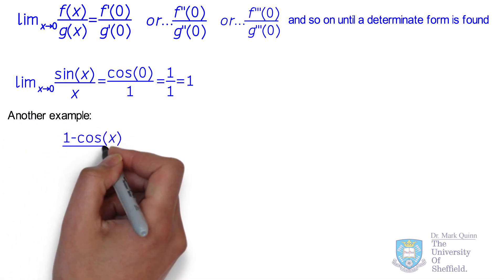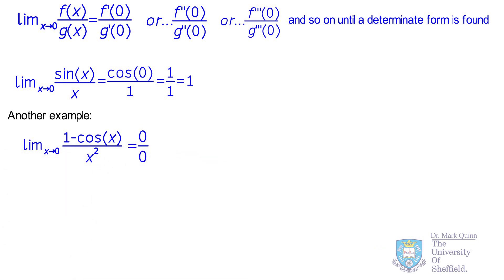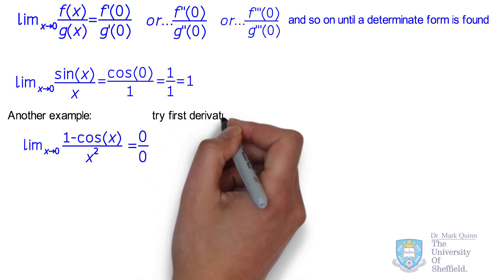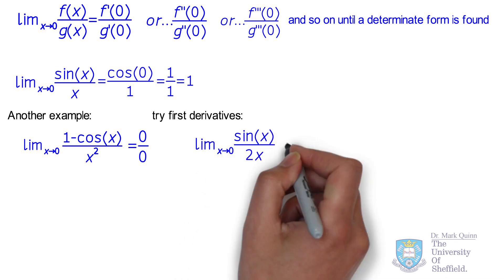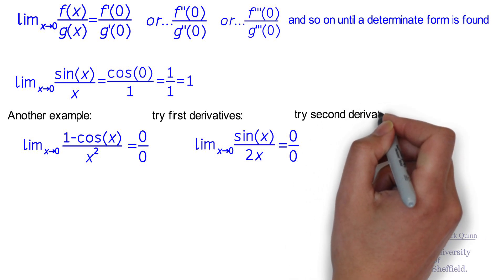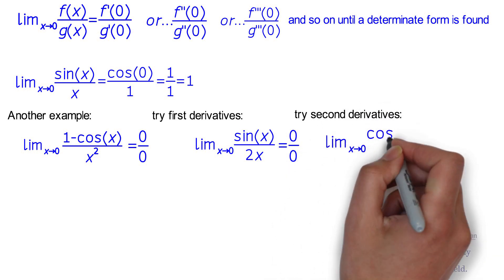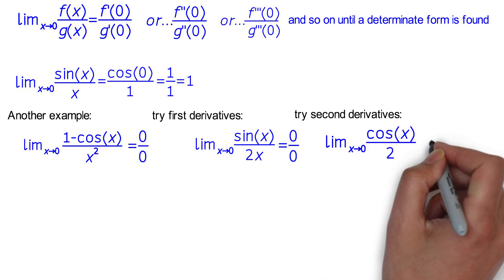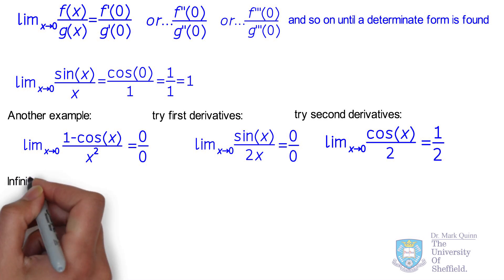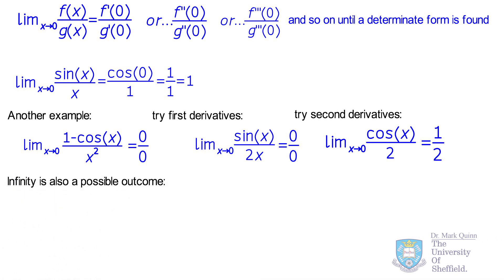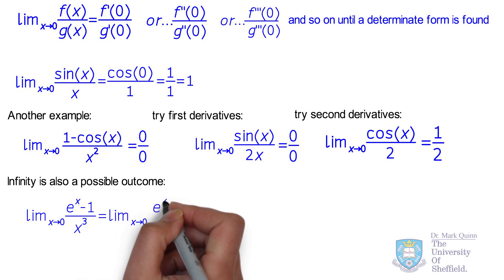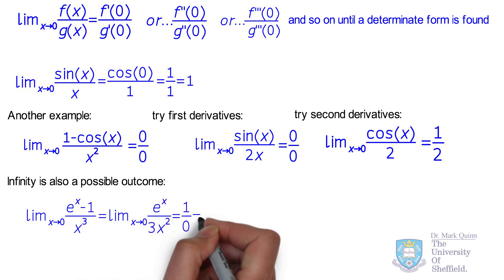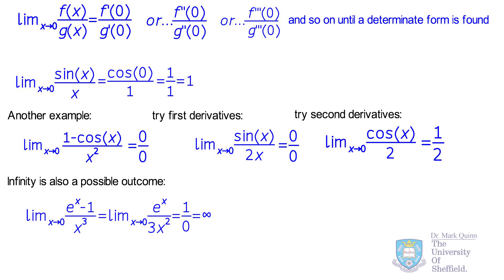Another example is when we need to go to higher derivatives. For the function (1 − cos x) / x², the first derivatives still give an indeterminate value of 0/0, so we continue and use the second derivatives, which provide a determinant value. Hence for this function as x goes to 0 we expect a value of 1/2. Another example is when the determinant value is infinity: for (e^x − 1) / x³ evaluated as x goes to 0, the ratio of the first derivatives is e^x / (3x²), giving 1/0 which is infinity — a determinant form.